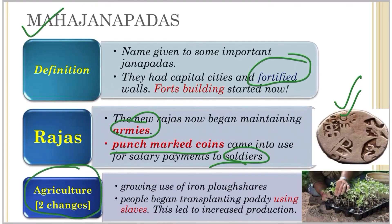There were two major changes in agriculture around this period. First was the growing use of iron plowshares - unlike the wooden plows of earlier periods, iron plowshares could turn over heavy clay soil better, producing more grain. Second, people began transplanting paddy with the help of laborers: instead of scattering seeds on the ground, seedlings were grown first and then planted in the fields, leading to increased crop survival and higher production.